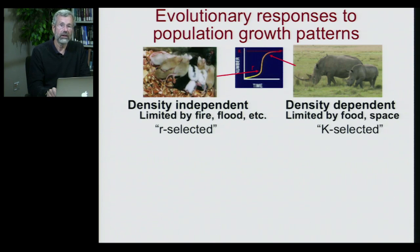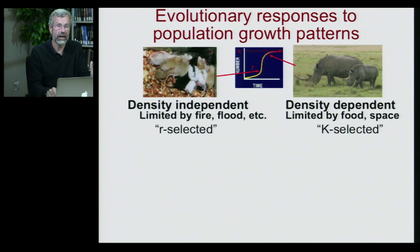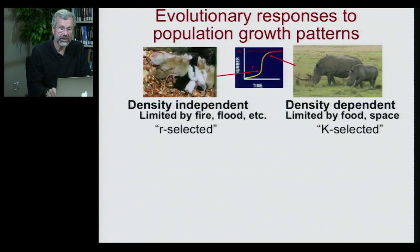We can conveniently dichotomize these into what are called R-selected species. If you're always a long way below the carrying capacity, you're going to be able to grow at exponential growth rates. Whereas if you're up against the carrying capacity almost all the time, you can be said to be K-selected — always coping with high population density, limited food, limited space.